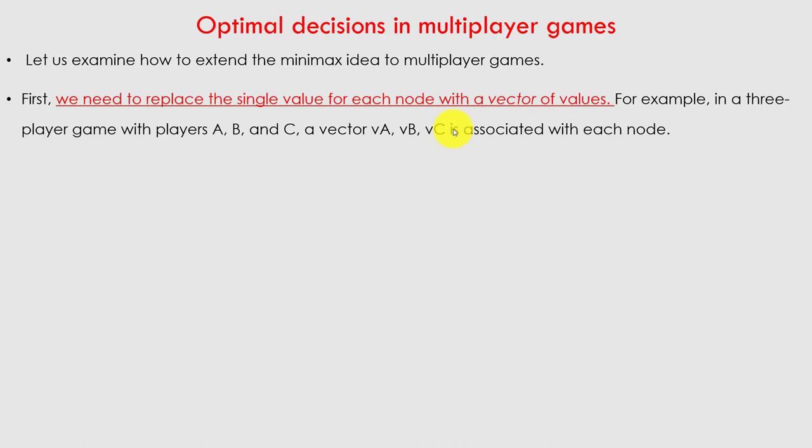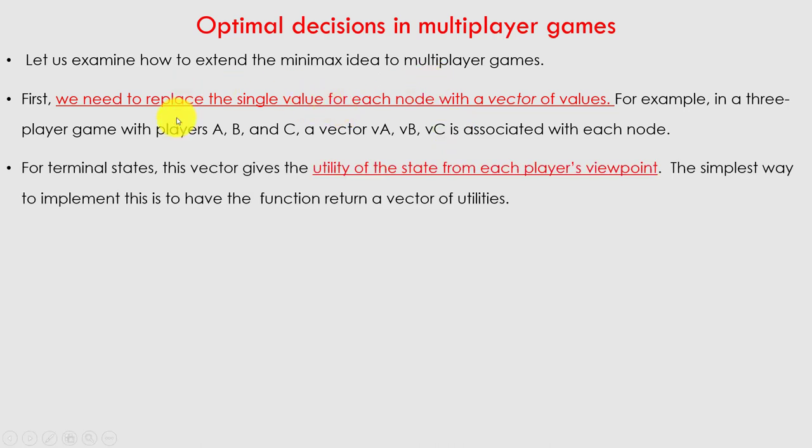The game can be for 2 players, 3 players, or 4 players. How many players there are is a fixed, static value. But if there are more than 2 players, then we have to think in terms of vectors. For a terminal state, this vector gives the utility of the state from each player's viewpoint.